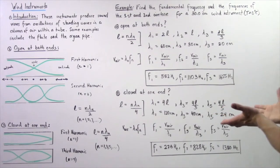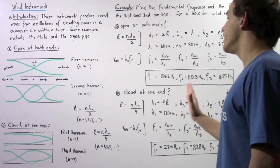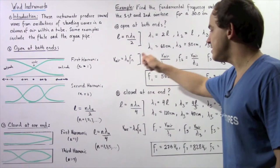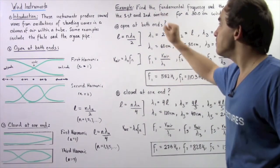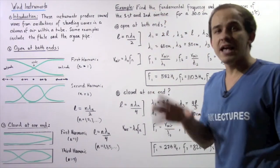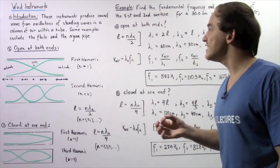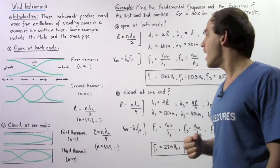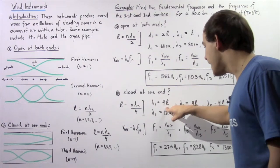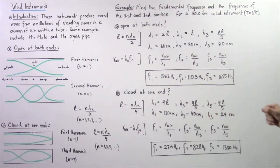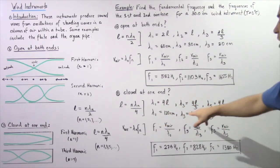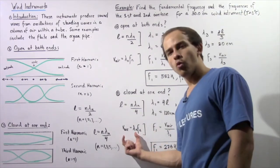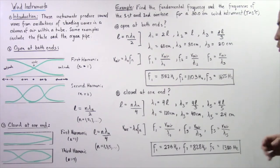Now for part b, we calculate the same frequencies but with the instrument closed at one end, using L equals n times lambda-n divided by 4. A key difference from part a: in part a the first and second overtones are the second and third harmonics, but here the first overtone is the third harmonic and the second overtone is the fifth harmonic. So lambda-1 equals 4L, lambda-3 equals 4L divided by 3, and lambda-5 equals 4L divided by 5. Plugging in L equals 30 cm: lambda-1 is 120 cm, lambda-3 is 40 cm, and lambda-5 is 24 cm. The velocity of air at 0 degrees Celsius is 331 m/s.